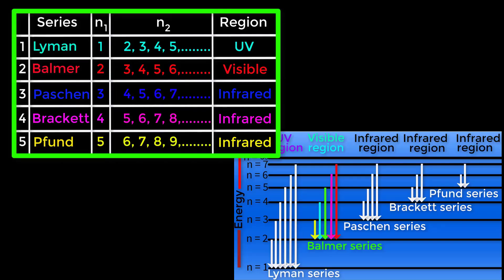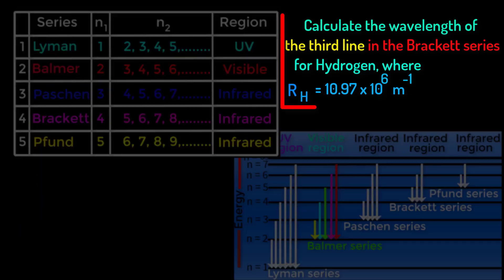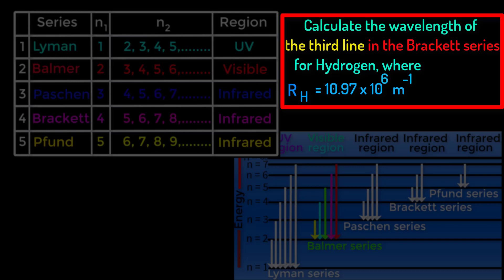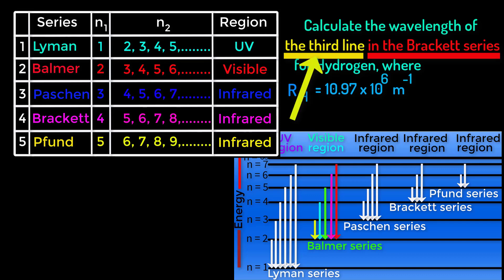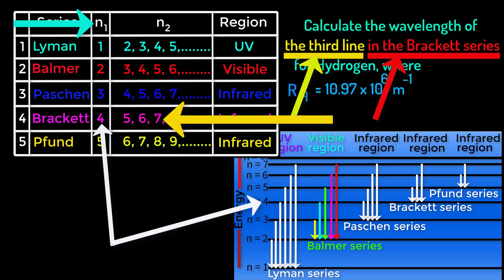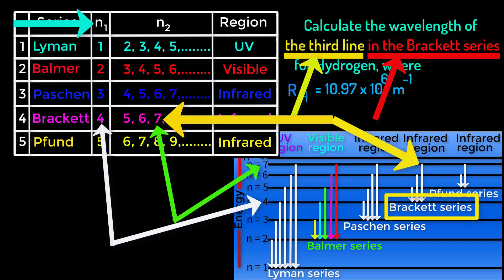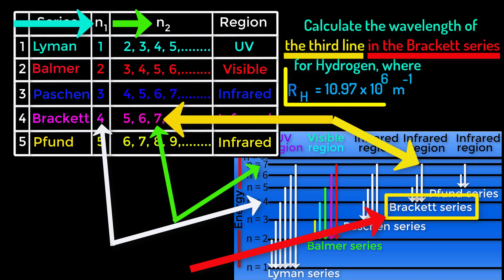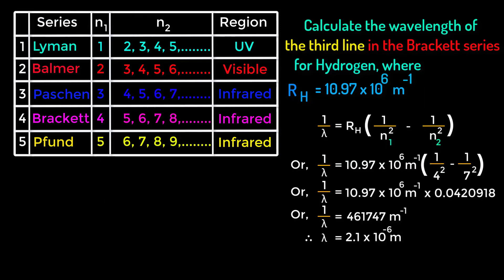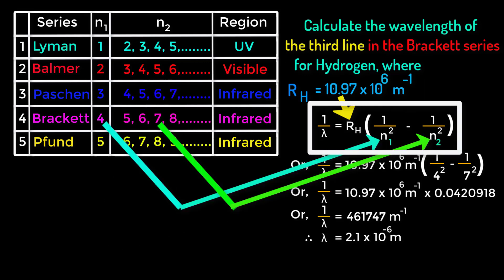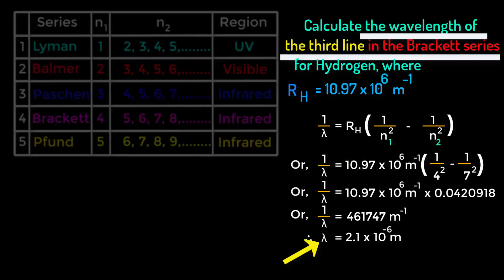Using all the information from this chart, we will now solve this problem: calculate the wavelength of the third line in the Brackett series for hydrogen, where RH equals 10.97 times 10 to the power 6 per meter. For Brackett series, n1 equals 4. The third line gives n2 equals 7. Putting the values of RH, n1, and n2 into the formula for hydrogen atom, the wavelength of the third line in the Brackett series equals 2.1 times 10 to the power negative 6 meters.